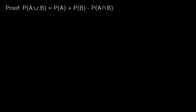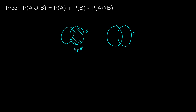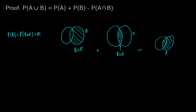Looking at a Venn diagram, B can be thought of as two components: a portion equivalent to B intersection A-bar (the part of B outside A), and a portion equivalent to B intersection A (the overlap). Adding these two together gives us the full probability of B. So our first fact is: P(B) = P(B ∩ A-bar) + P(B ∩ A).